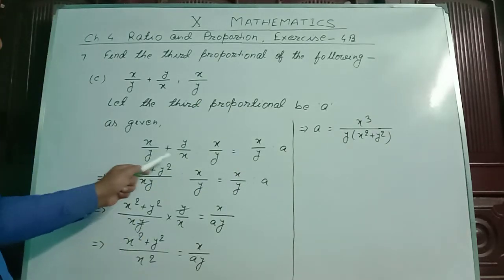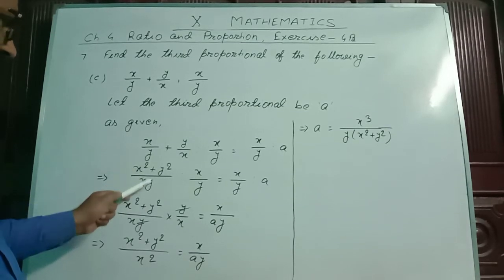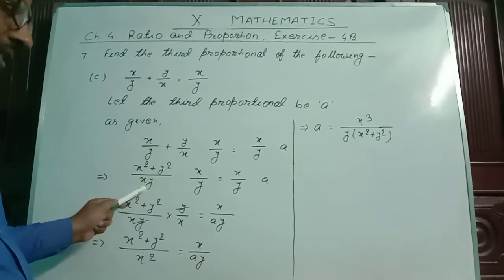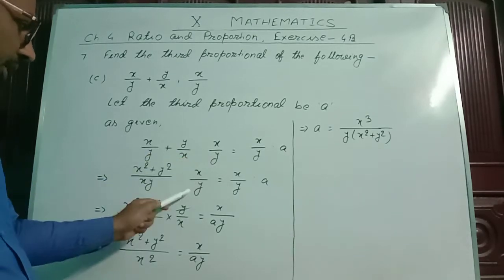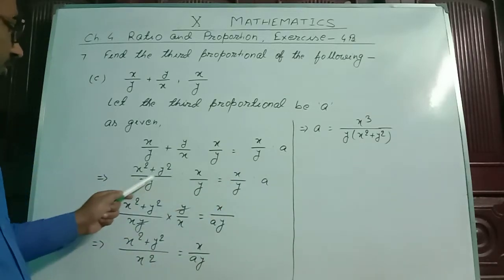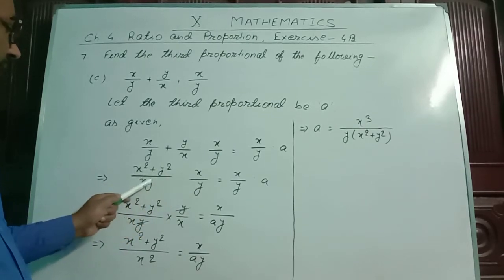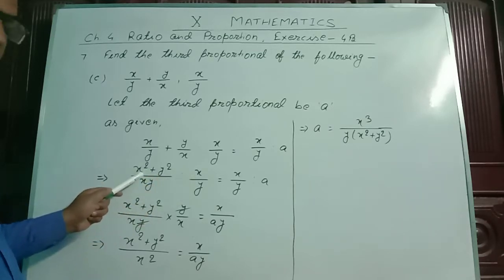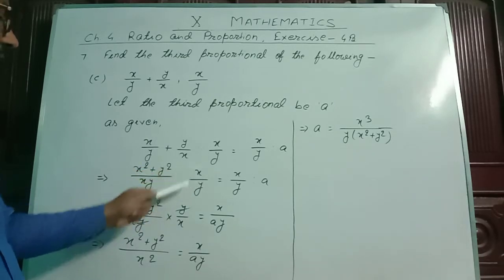Now, the LCM became xy. So the numerator will be: I divided this LCM by the denominator y, so x is left — x into x gives x². Plus, I divided the LCM by the denominator x, so y into y gives y². So x² + y² divided by xy equals x/y, which equals x/y : 2a. Taking the reciprocal, we can write (x² + y²)/xy × (y/x).